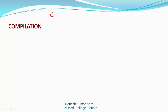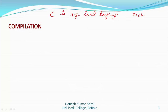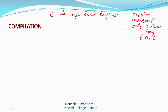Let us take the example of C. C is basically a high level language, also called a middle level language, which we will discuss later on. The program instructions we write in a high level language are easy to understand by human beings. But the computer, being a machine, can understand only binary language, also known as machine language, which is language in the form of 0 and 1.